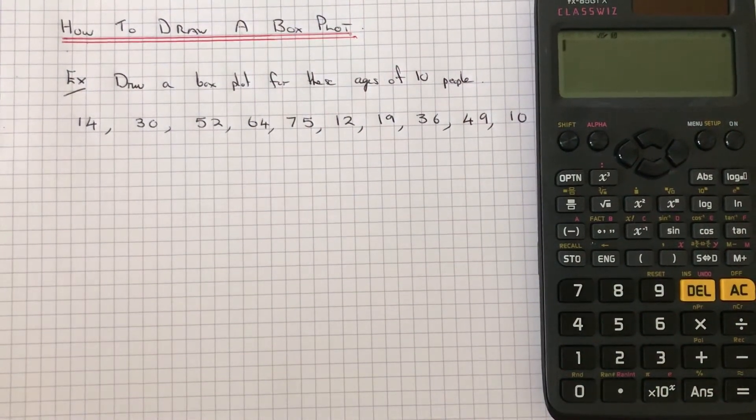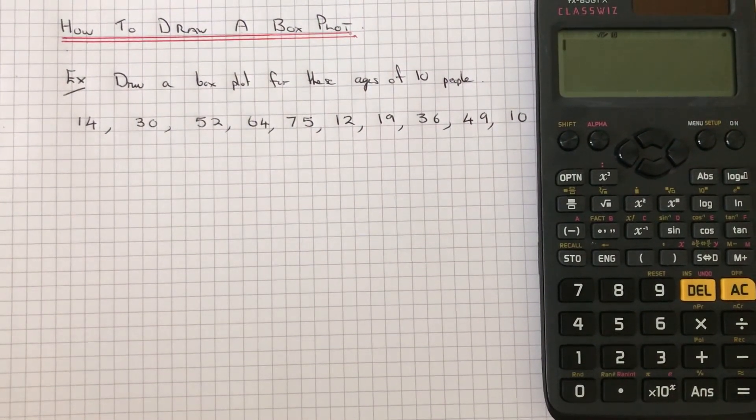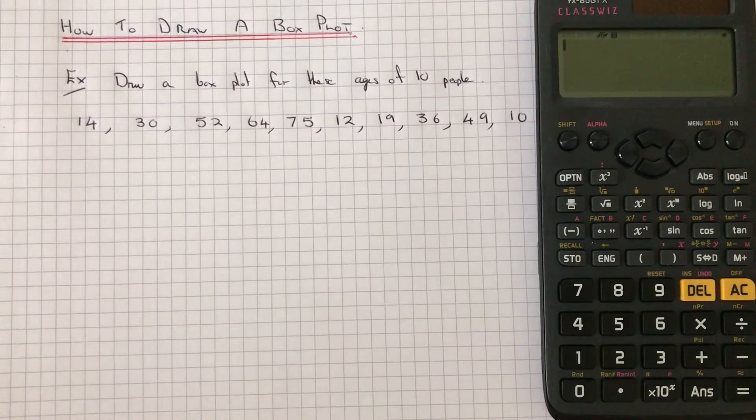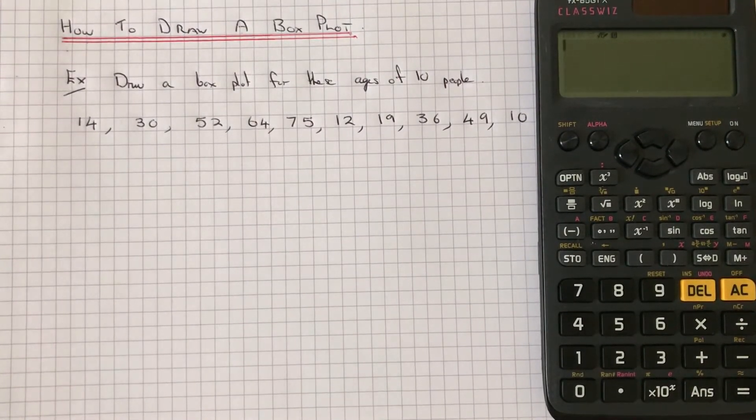Hi guys, so I'm going to show you how to draw a box plot using a Casio ClassWiz scientific calculator. So let's go straight to the example then. So we've got to draw a box plot for these ages of 10 people.